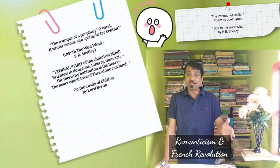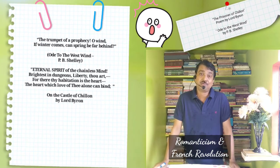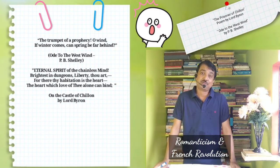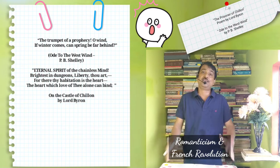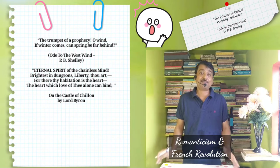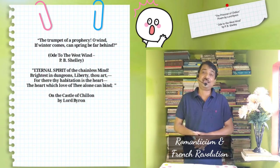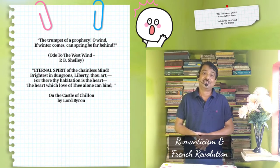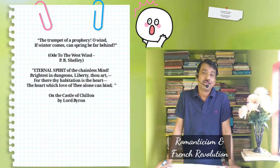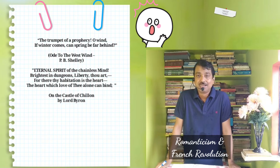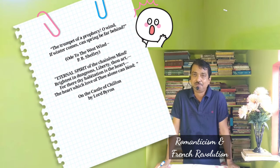I can quote a few lines from Shelley's Ode to the West Wind: the trumpet of a prophecy — O wind, if winter comes, can spring be far behind? This line from Ode to the West Wind tells many things about evolution.